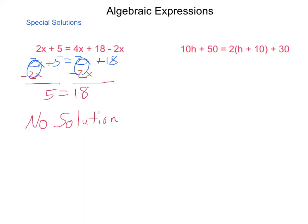Now, another special situation is shown here on the right. If we have 10h plus 50 equals 2 times h plus 10 plus 30. Distributing on the left hand side, I will get 10h plus 50 equals 2h plus 20 plus 30. Now, combining my like terms on the right hand side, I get 10h plus 50 equals 2h plus 50.